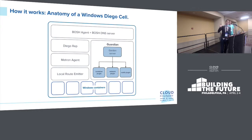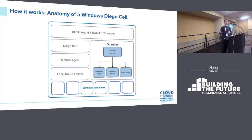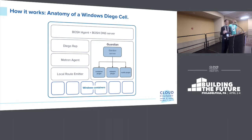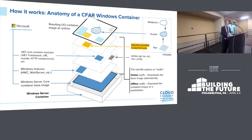Diving deeper, this is the anatomy of a Diego cell for Windows, and it looks surprisingly like the anatomy of a Linux Diego cell — exactly the same, except at the bottom of the Guardian stack, where instead of running runc, we run an equivalent container plug-in called winc, which calls into the same APIs the Docker daemon calls into on Windows. We don't run Docker in Windows Diego cells, but we use the same integration shim calling into the host container service and host network service.